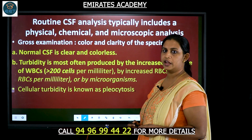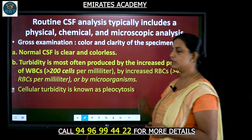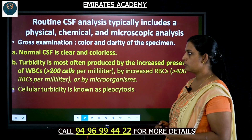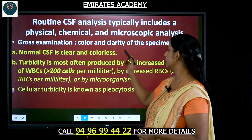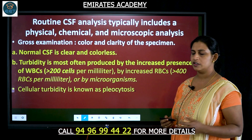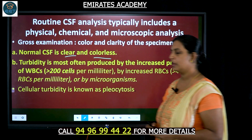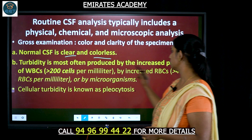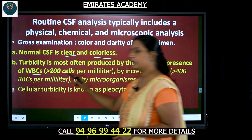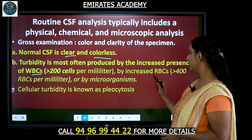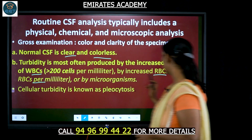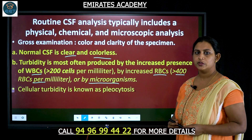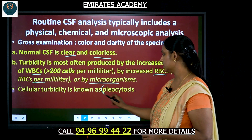CSF can be analyzed in three ways: physical examination, chemical, and microscopic analysis. The gross examination of CSF is done based on color and clarity. A normal CSF is clear and colorless. If there is turbidity, it means there is presence of cells — turbidity is often produced by increased presence of WBCs if more than 200 cells per ml, or by increased presence of microorganisms. Turbidity in CSF is known as pleocytosis.